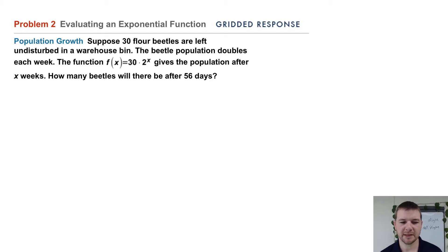The function f(x) = 30 × 2^x gives the population after x weeks.